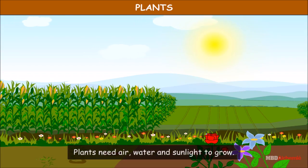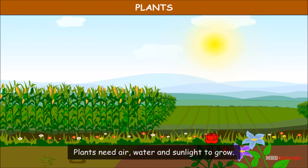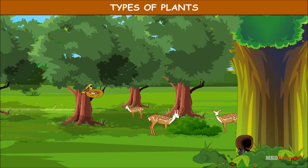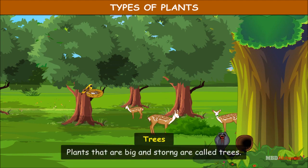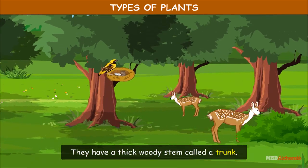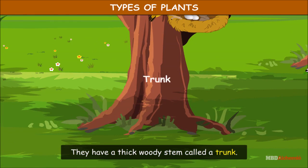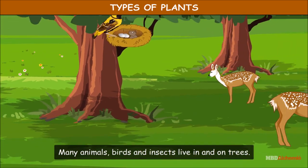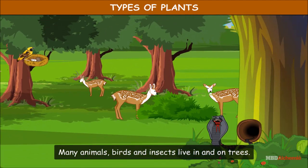Plants need air, water, and sunlight to grow. Types of plants: Trees — plants that are big and strong are called trees. They have a thick woody stem called a trunk. Many animals, birds, and insects live in and on trees.